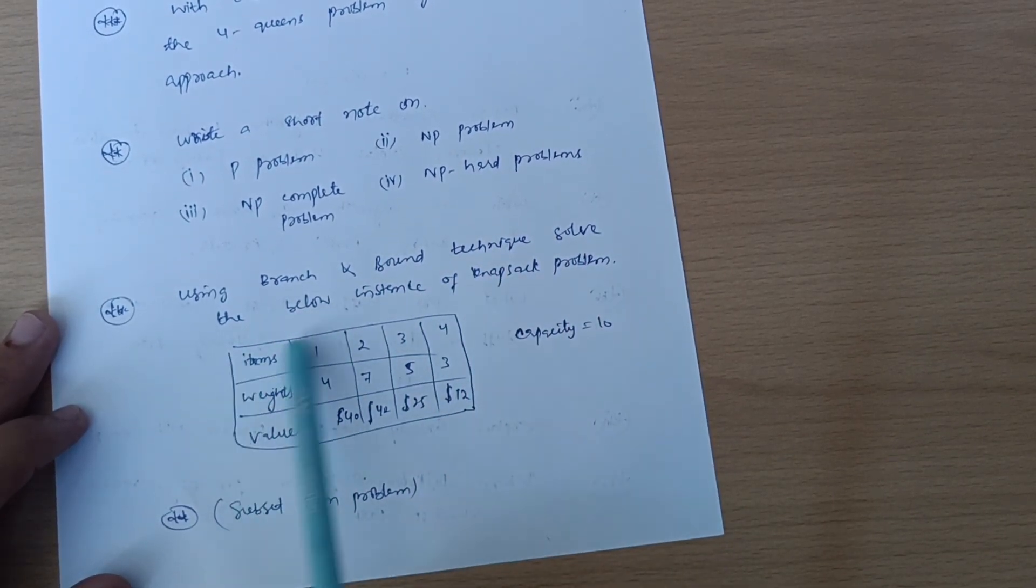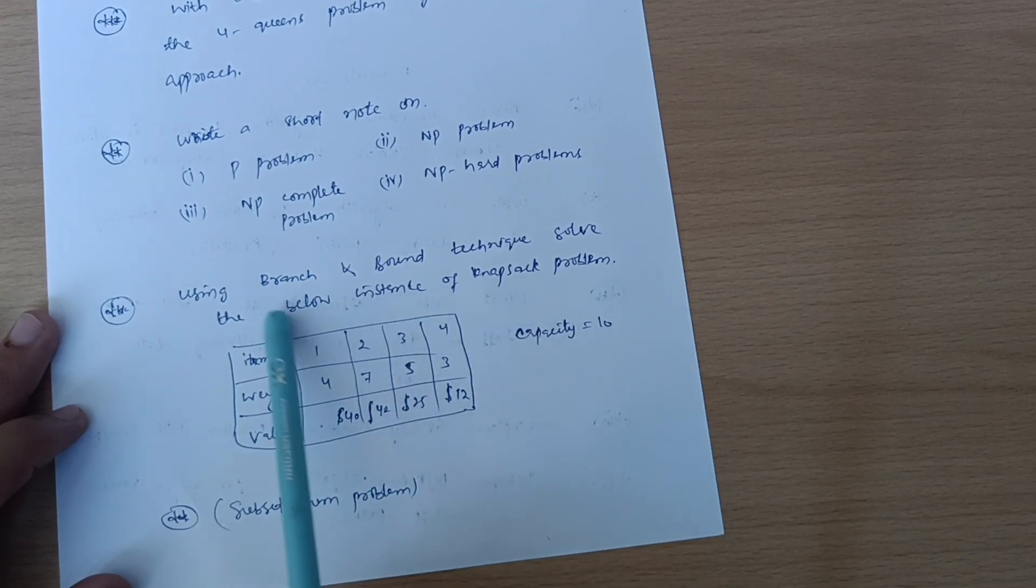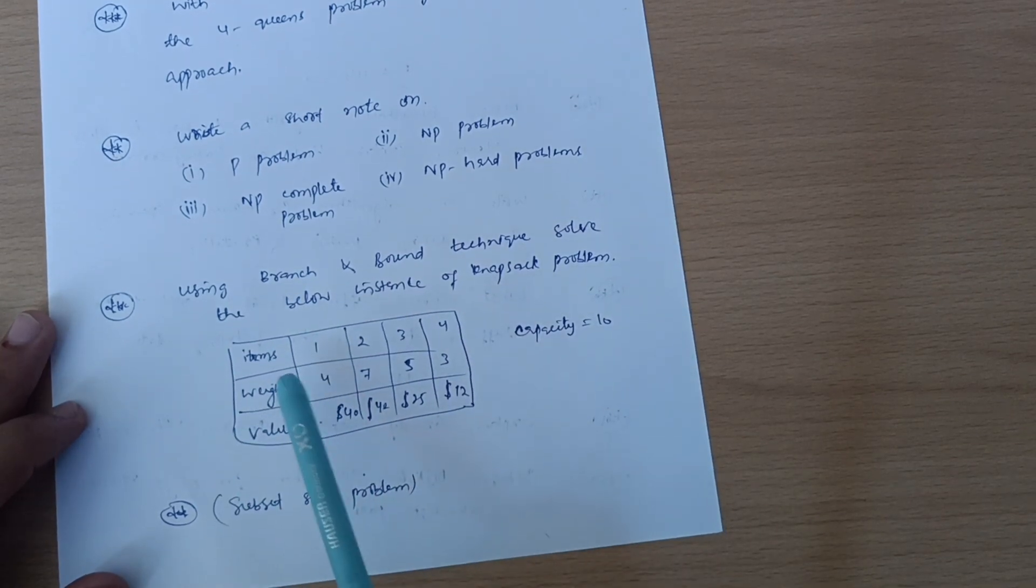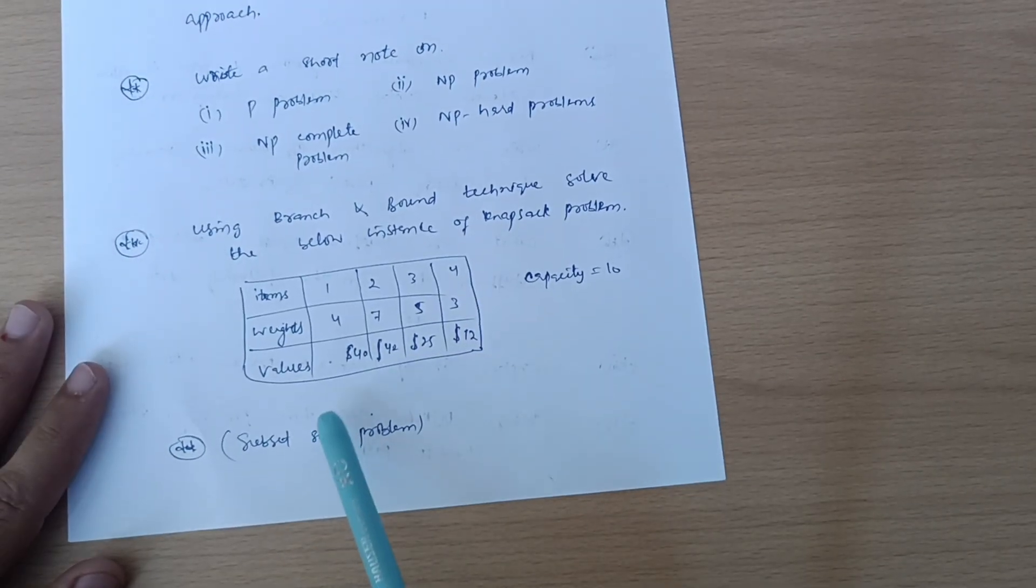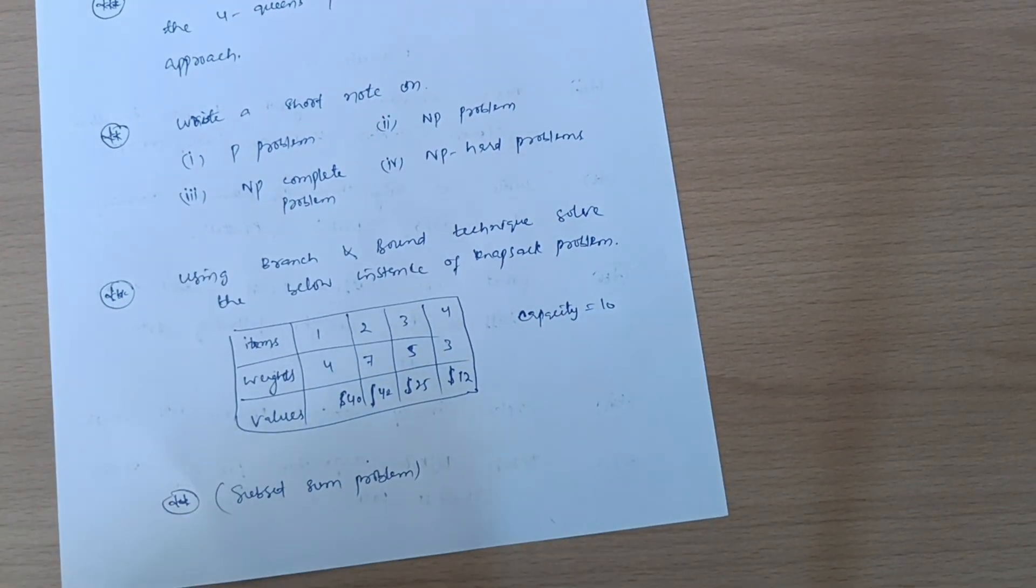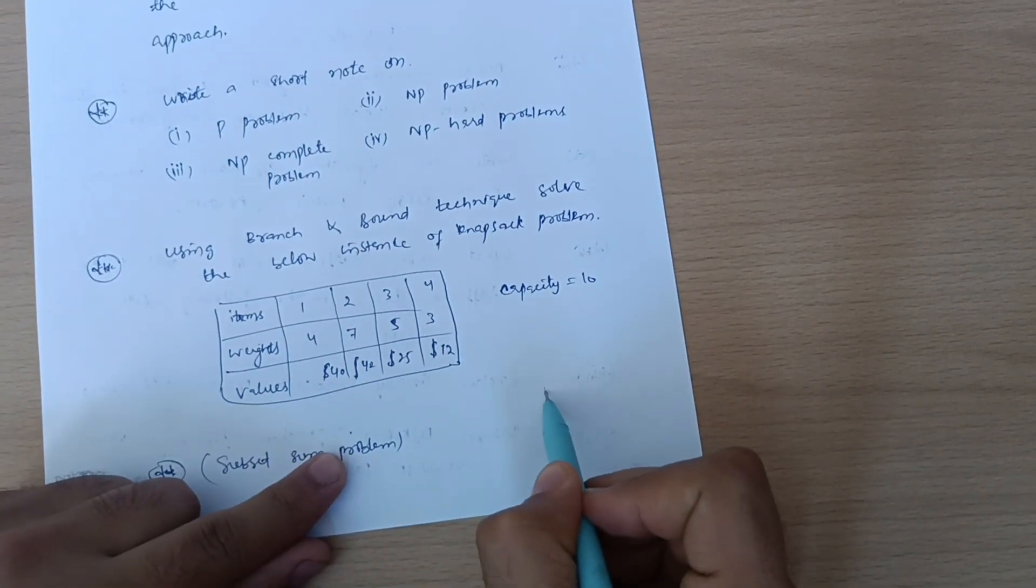Using branch and bound technique, solve the below instance of knapsack problem. The data will be given: items, weights, and values. Capacity will be given, so you have to use branch and bound technique to solve the knapsack problem. Subset sum problems are also there. As I mentioned earlier, you should refer first to the model question paper.